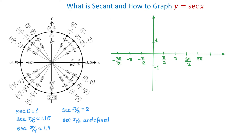First we need to graph the cosine function. At 0, cosine is 1, so we plot the point (0, 1). At pi over 2, cosine is 0; at pi it is negative 1; at 3 pi over 2 it is 0; and at 2 pi it is positive 1. Moving clockwise from the positive x-axis gives negative angles: at negative pi over 2 cosine is 0, at negative pi cosine is negative 1, and at negative 3 pi over 2 cosine is 0. We connect these points to form the cosine graph, drawn as a dotted line since it is just a guide.